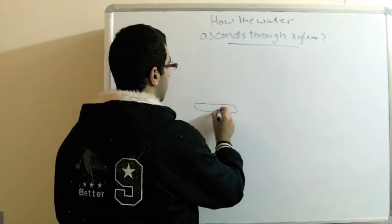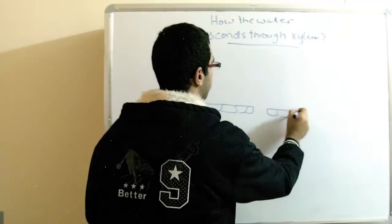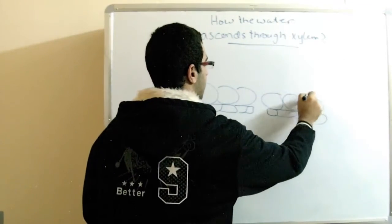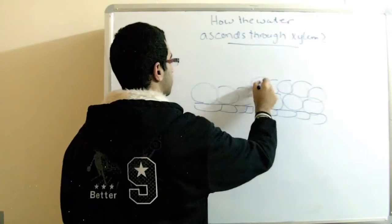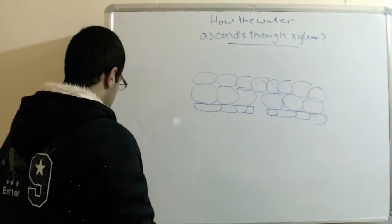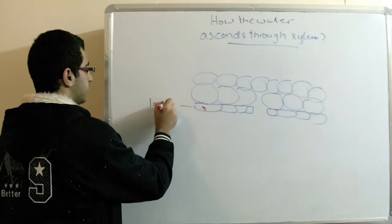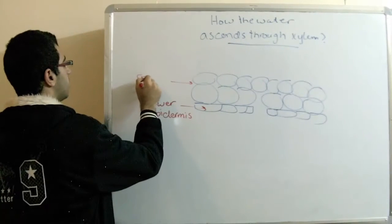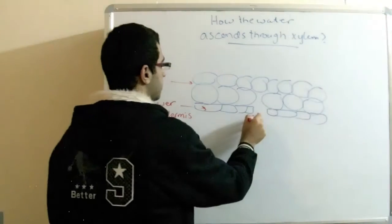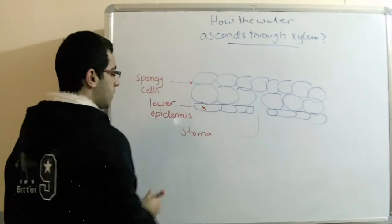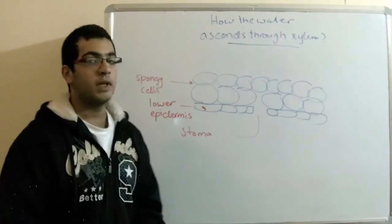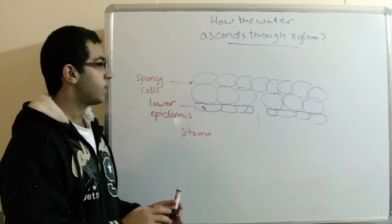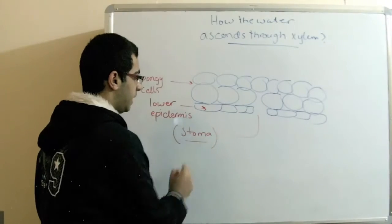Here we drew the lower surface of the flat leaf. So this is the lower epidermis. These are the spongy cells, and this is the stoma. So actually the plant is in continuous need for transpiration. Why is the plant in continuous need for transpiration? And the transpiration is the most important factor for the ascend of water through the xylem.